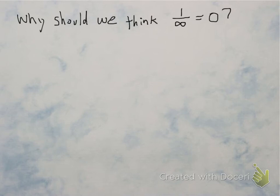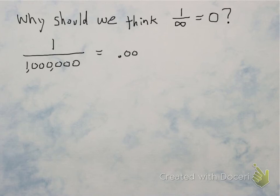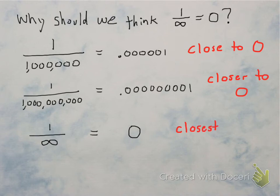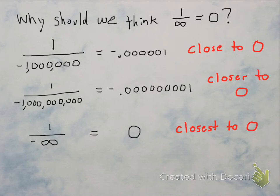Before we talk about infinite limits, let's discuss why 1 over infinity is 0. Infinity is like a big number — take 1 divided by a big number and you get something really close to 0. Divide by an even bigger number and you get even closer to 0. Divide by the biggest number, infinity, and you get 0. The same applies with negatives — 1 divided by a big negative number gives you negative numbers close to 0, but negative 0 is still 0. So think of 1 divided by infinity as 0.